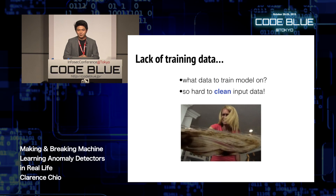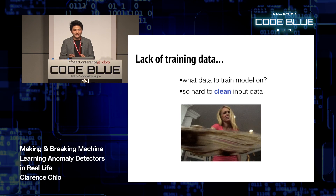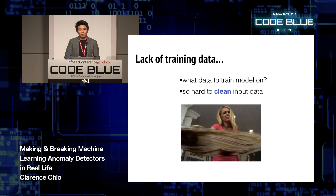The second point is the lack of training data. What data do you train your model on? When looking at input data, it's often hard to identify the bad points so you can clean it. If you're using supervised learning, you want a clean set of what is positive and negative. But here's the paradox: if you could accurately determine in real time what is good and bad, then you don't actually need the anomaly detection system in the first place.